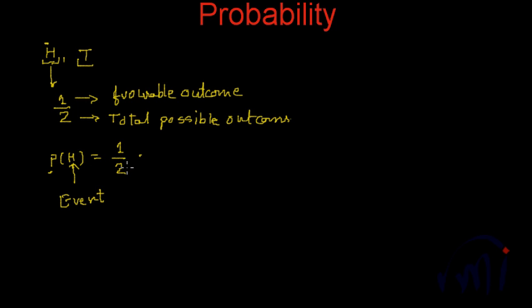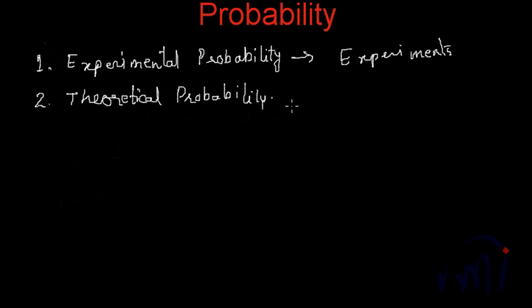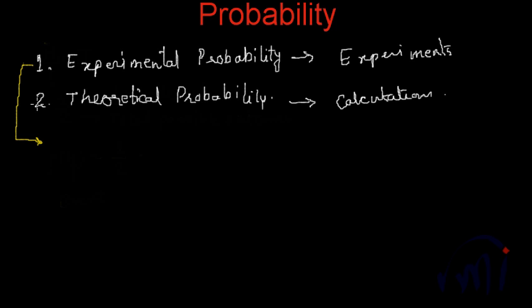So this is what probability is, and now there are actually two types of probabilities. First is experimental probability and second is theoretical probability. Experimental probability is based on experiments, and theoretical probability is completely based on calculations. Theoretical probability is what we are going to learn in the next few videos. We are trying to establish a relationship between these two and discuss why theoretical probability is preferred over experimental probability and how theoretical probability is approximately accurate to that of experimental probability.